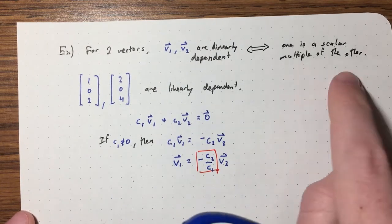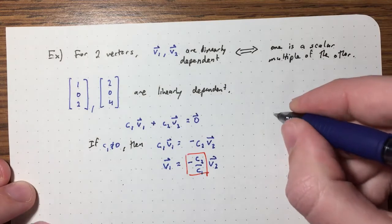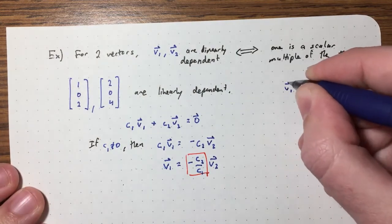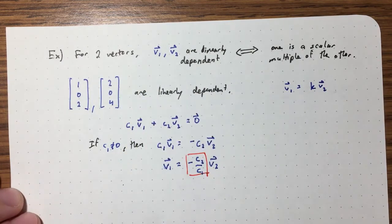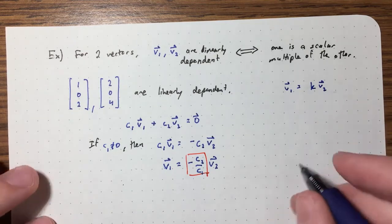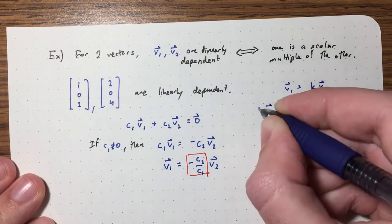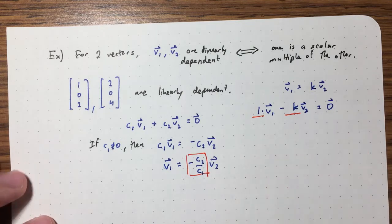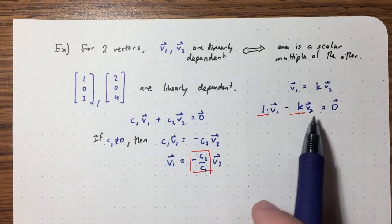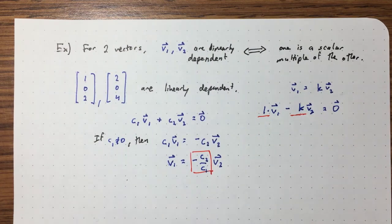Conversely, if V1 = K·V2, we can move everything to one side to get a linear combination of V1 and V2 equaling zero where not both scalars are zero. So V1 and V2 are linearly dependent. These statements are equivalent. For three or more vectors, there is no easy visual way to determine linear independence.